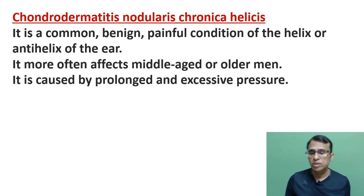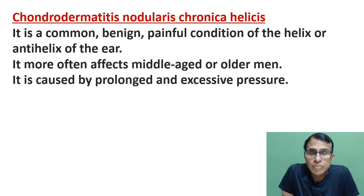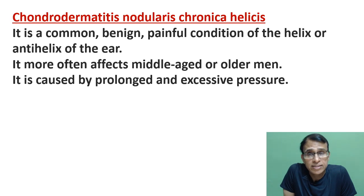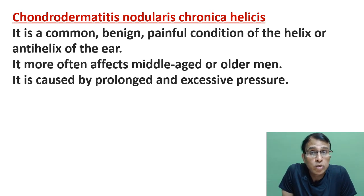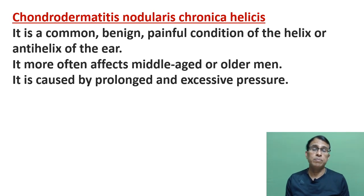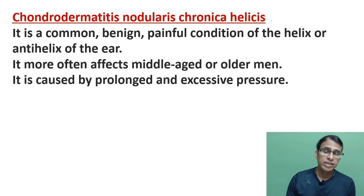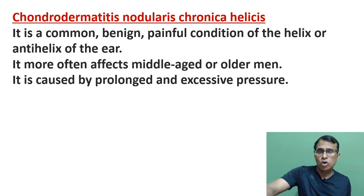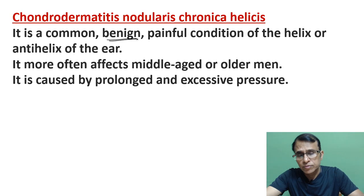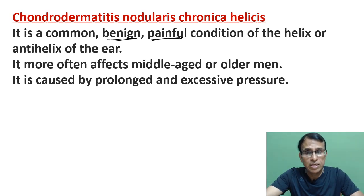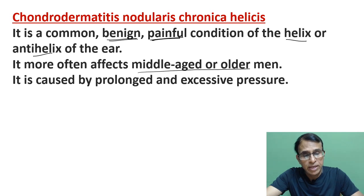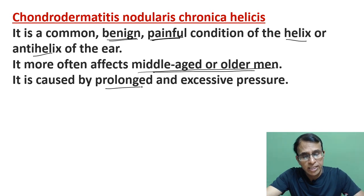Next is a rare condition called chondrodermatitis nodularis chronica helicis. It is a chronic disease of the helix and antihelix — 'chondro' meaning cartilage, 'dermatitis' meaning skin inflammation — presenting as a nodular swelling on the skin and cartilage of the pinna. The site is the helix or antihelix, it is a common benign condition, it is painful — the main reason patients present — and it often affects middle-aged or older males.